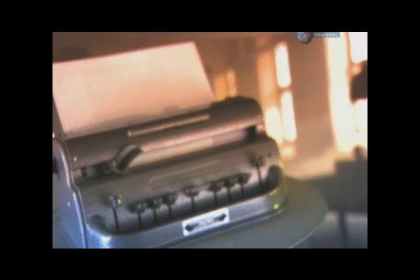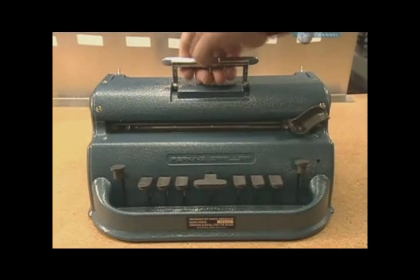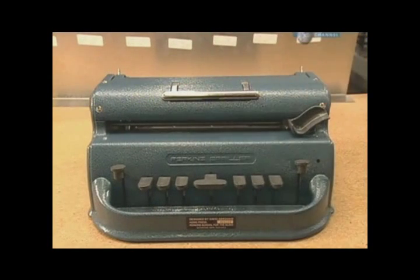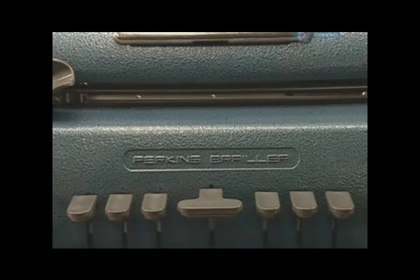The Braille system is based on six dots arranged in a rectangle three dots high by two dots across. This is called the Braille cell. Different configurations of dots within this cell represent different letters of the alphabet, numbers, and punctuation marks.